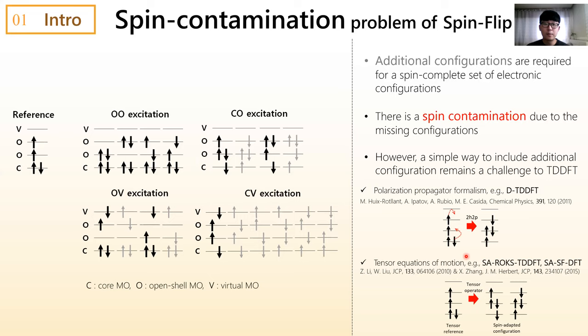Another approach is based on tensor equation of motion. In this approach, spin-adapted configuration is automatically obtained by applying tensor operator onto a tensor reference. The spin contamination in spin-flip TDDFT can be completely eliminated by spin-adapted version of tensor coupling scheme. Or more recently, there was an attempt to derive spin-adapted spin-flip CIS using tensor equation of motion. And the ad hoc modification of the matrix elements to DFT-like exchange correlation terms yield a spin-adapted version of spin-flip TDDFT.